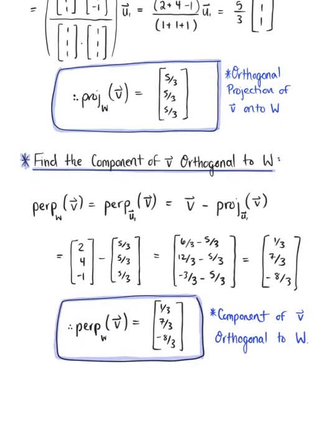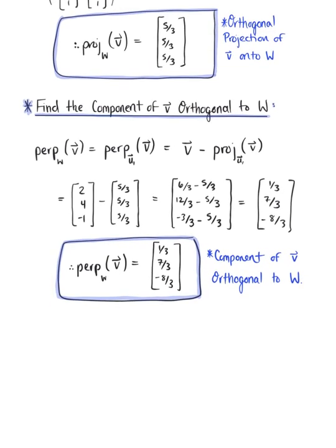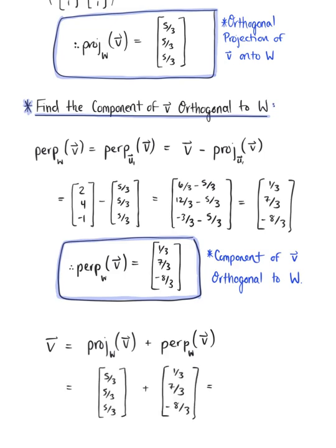With this final answer, we can see how we decompose vector v into the sum of the orthogonal projection of vector v onto subspace W, plus the component of vector v orthogonal to subspace W. Plugging in what we found above, we can see that this is indeed equal to vector v: we have 6/3, 12/3, -3/3, which simplifies to 2, 4, -1, confirming our decomposition of vector v.